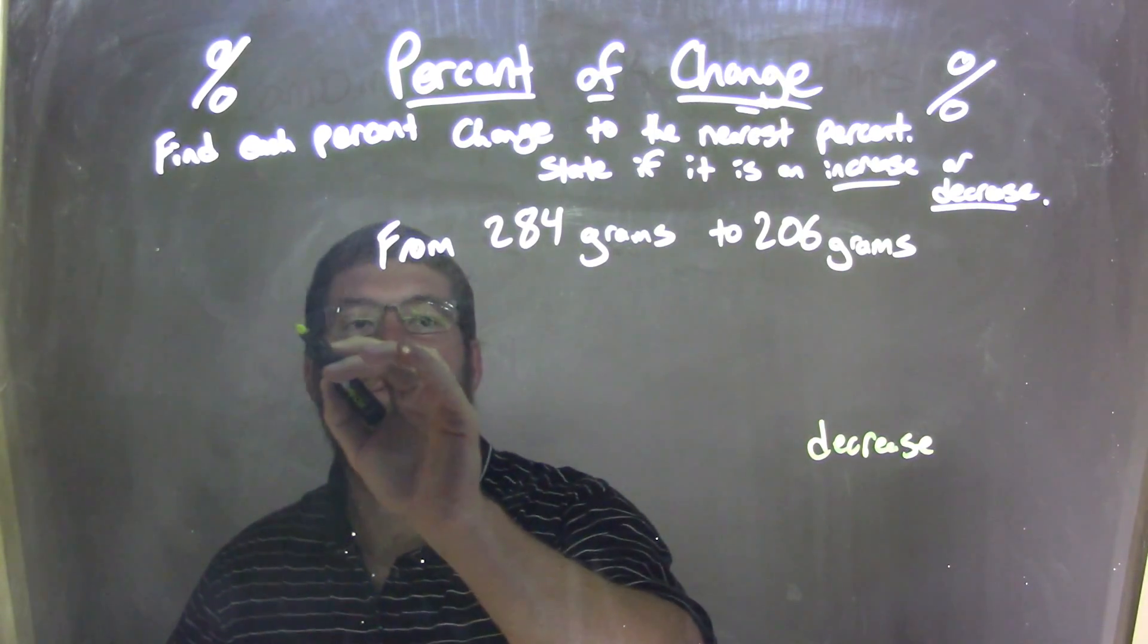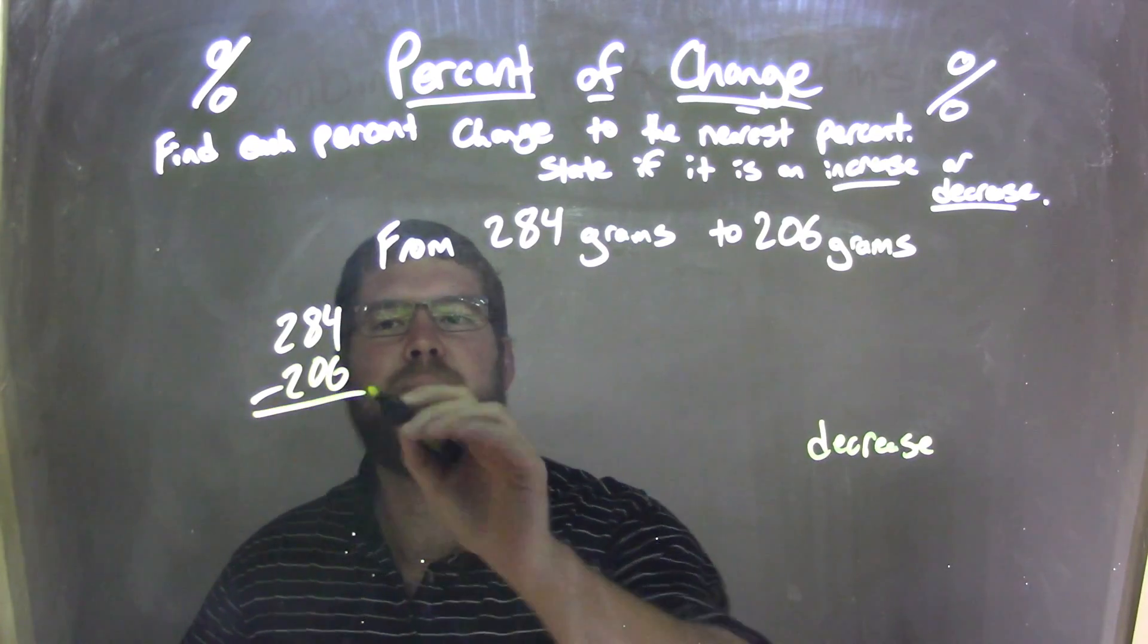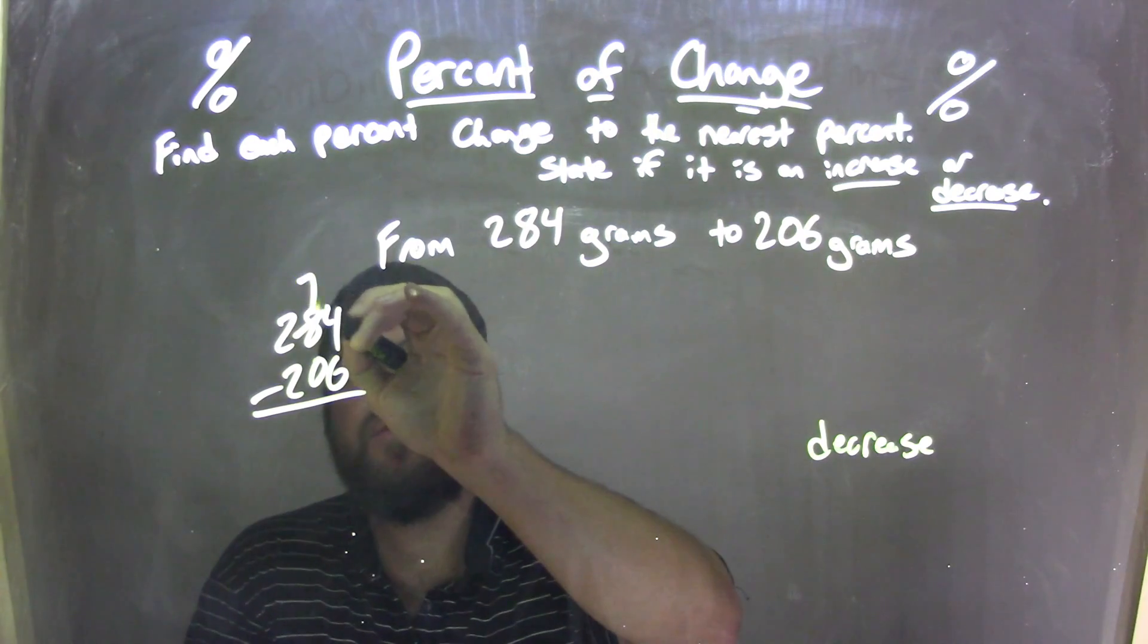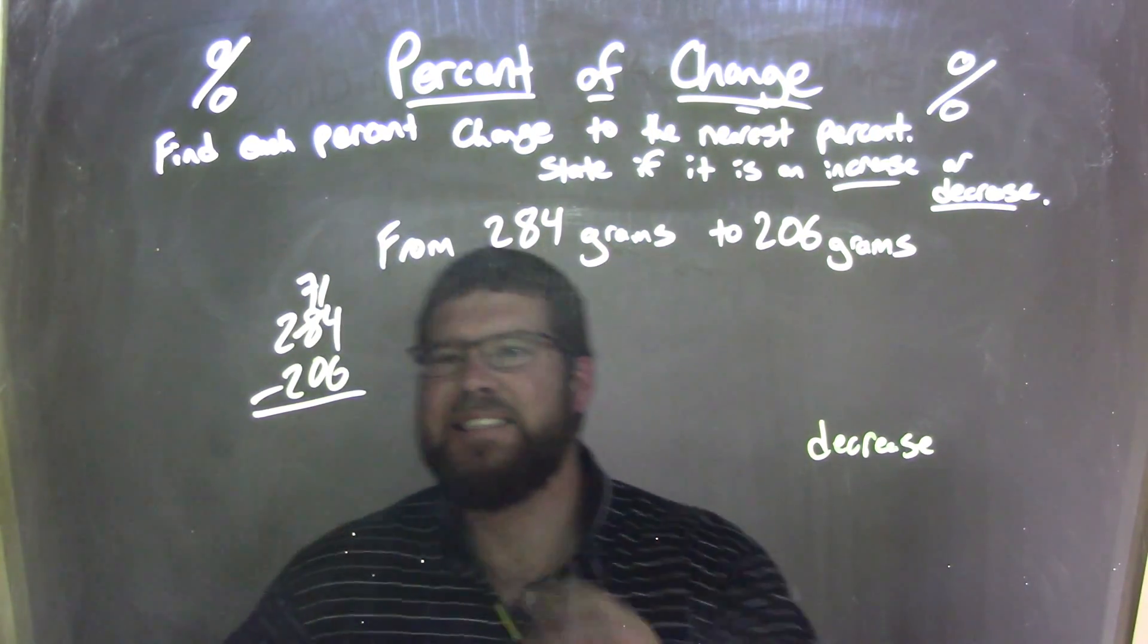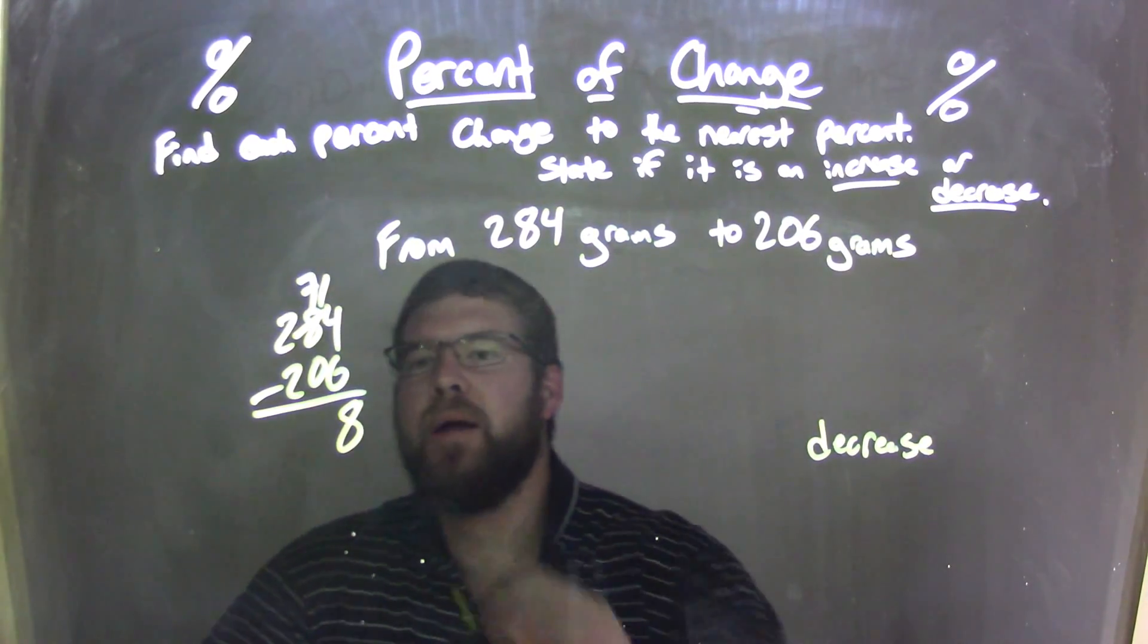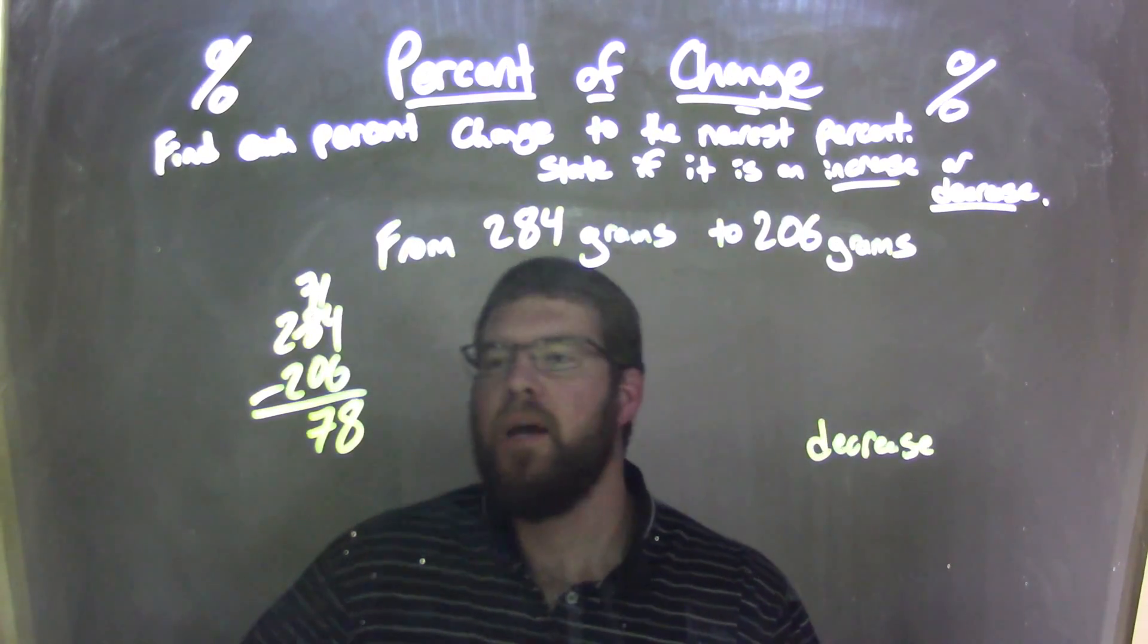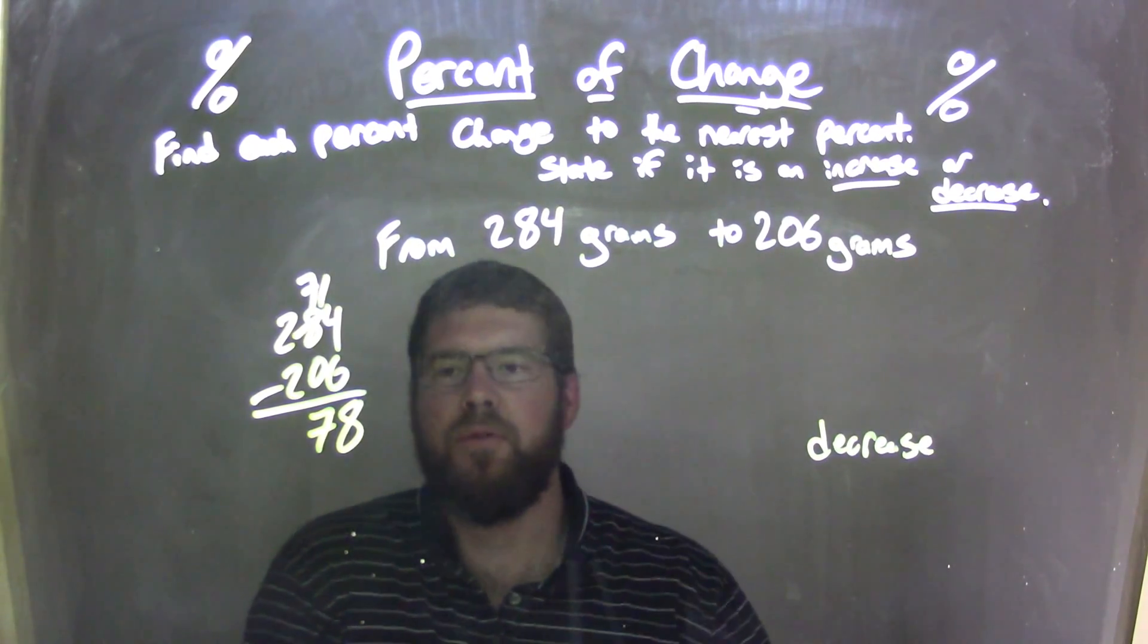So, let's go find the difference between the two. 284 minus 206. Well, 4 minus 6, oh, I can't do that here. So, make that 8 into a 7. 14 here, so 14 minus 6 comes out to be an 8, right? An 8 here. 7 minus 0 is 7, and the 2 minus 2 is 0, right? So, we have 78 here as that little subtraction, the difference in grams between 284 and 206.